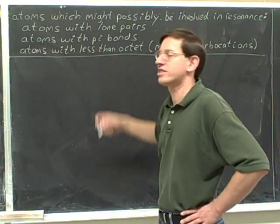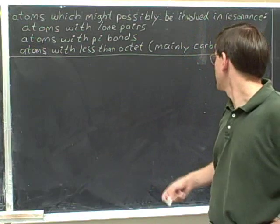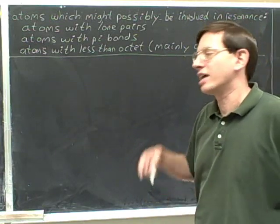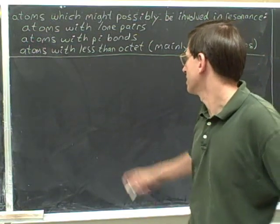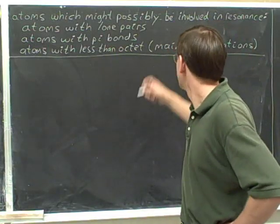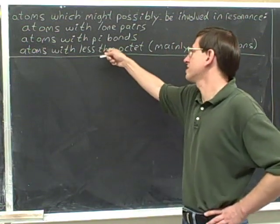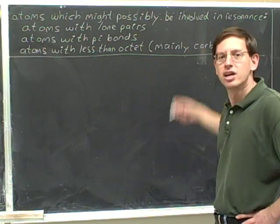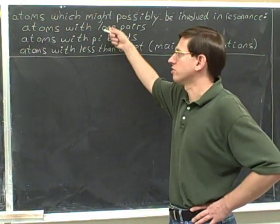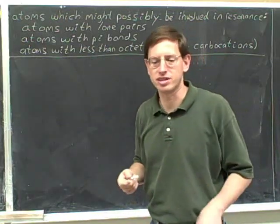An atom that has less than eight electrons can potentially participate in resonance, but almost always the example of that is going to be a carbocation. A carbocation has less than an octet of electrons. There are a couple unusual examples of atoms with less than an octet that are not carbocations, but those are really rare in organic chemistry. So for all intents and purposes, the three characteristics are: an atom with a lone pair, an atom with a pi bond, or a carbocation.